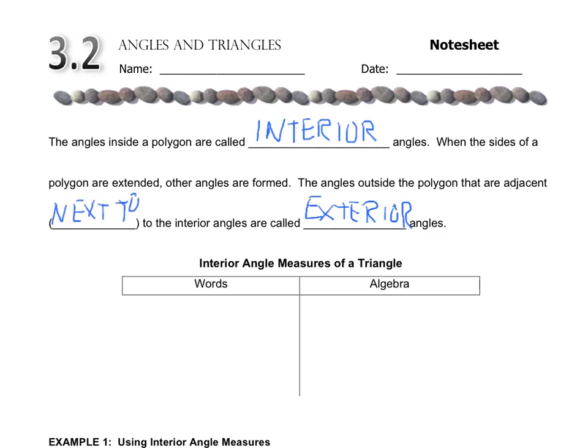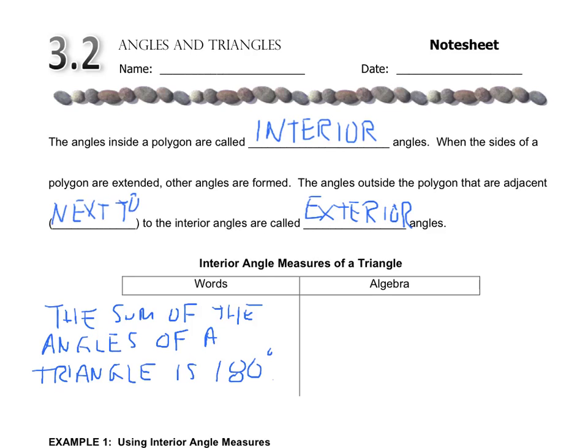The interior angle measures of a triangle: the sum of the angles of a triangle is 180 degrees. All triangles have three angles, but if you add all their interior angles, you will get 180 degrees. Algebraically, if X, Y, and Z are three angles, then X plus Y plus Z equals 180 degrees.